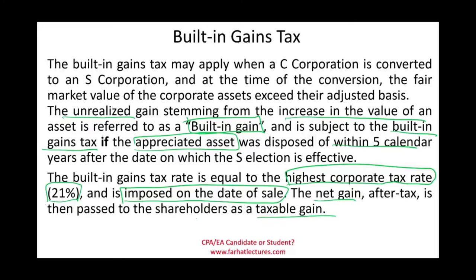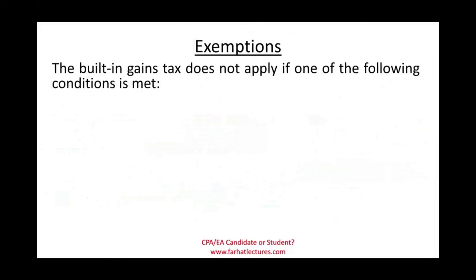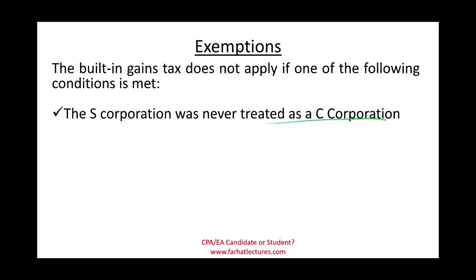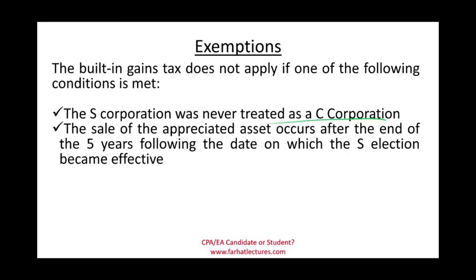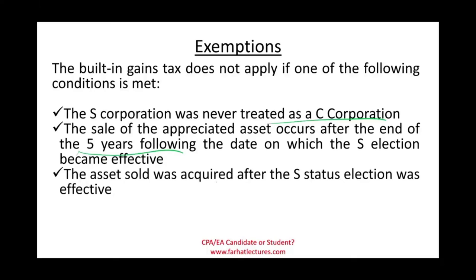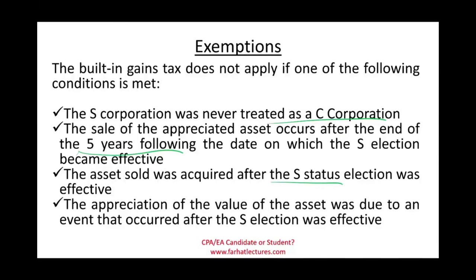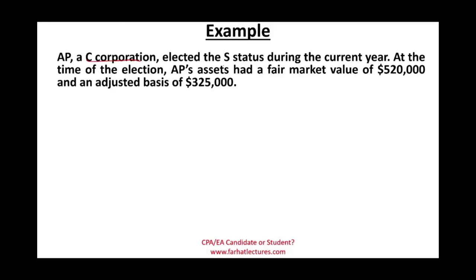The net gain after the tax is then passed to the shareholder as taxable gain — so double taxation is imposed. The built-in gains tax does not apply in these cases: if the S corporation was never treated as a C corporation; if the sale of the appreciated asset occurs after the end of five years; if the asset was acquired after the S status took effect; or if the appreciation in value occurred due to an event after the S election.